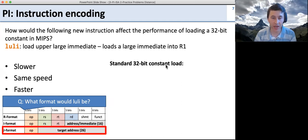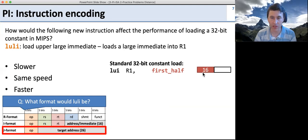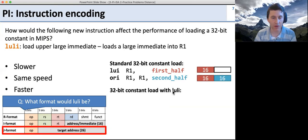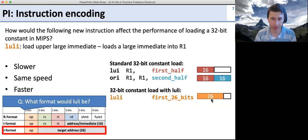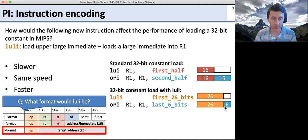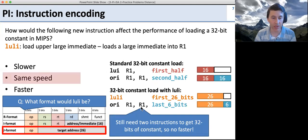With the standard load, we do load upper immediate to get the first half into register one, then OR it with an immediate for the second half — two instructions loading two 16-bit halves. With the new LULI instruction, we load the first part and get 26 bits, but that's not 32. We still need to fill in the remaining six bits using ORI again. So we still have two instructions total. It's no faster — the same speed — because even though we can load more in the first instruction, we still need a second instruction for the remaining bits.